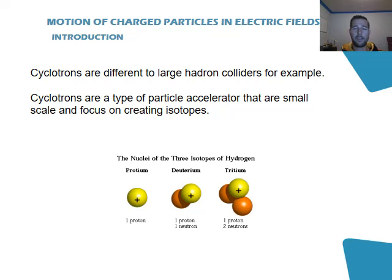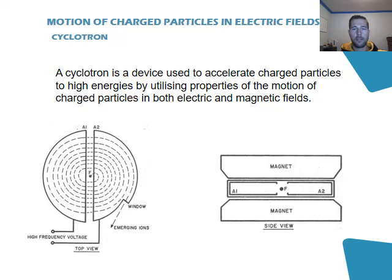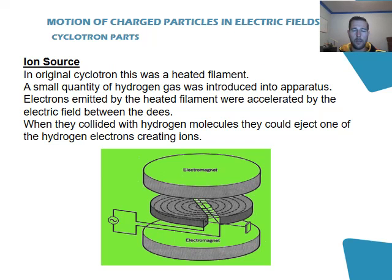A cyclotron is a device that is used to accelerate charged particles to high energies, meaning very high velocities, by utilizing the properties of electric fields and magnetic fields. I will now introduce some of the components of the cyclotron.